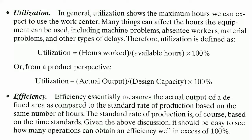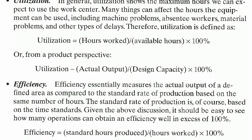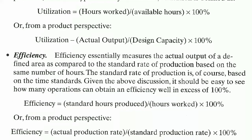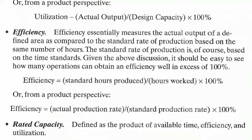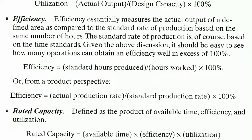From a product perspective, utilization equals actual output divided by design capacity, multiplied by 100%. Next, efficiency essentially measures actual output of a defined area as compared to the standard rate of production based on the same number of hours. The standard rate of production is based on the time standards.